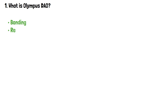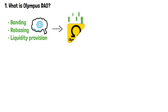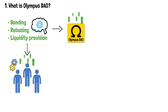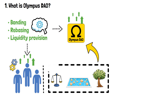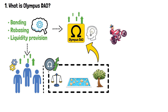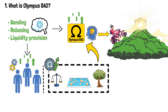These three components — bonding, rebasing and liquidity provision — work harmoniously to foster a resilient ecosystem within Olympus DAO. They empower participants to actively contribute to the stability, liquidity and growth of the protocol, creating an environment where OM can thrive as a sustainable reserve asset. I told you that understanding Olympus DAO is like climbing up the actual mountain — but once you get to the top and see the view over the DeFi world, that makes it all worth it.